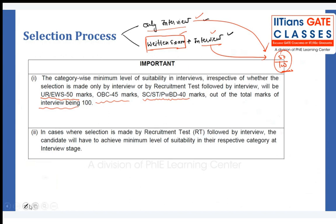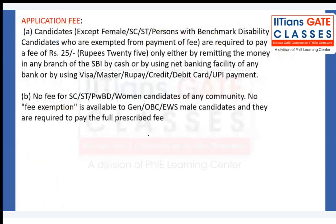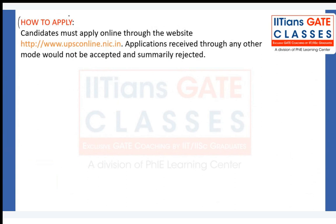These are very important points regarding the aeronautical officer post in DGCA. The application fee is very low — just 25 rupees for general, OBC, and EWS candidates. SC, ST, and all female candidates are exempted from paying any fee. The application link will be provided in the description below this video, where you can find the detailed notification PDF and register for this post.